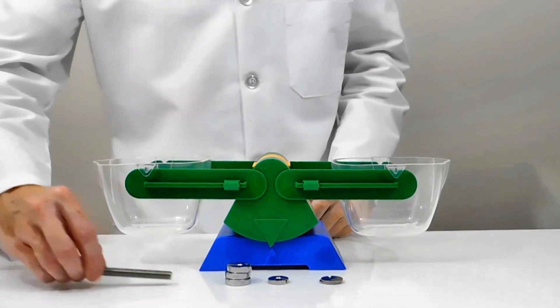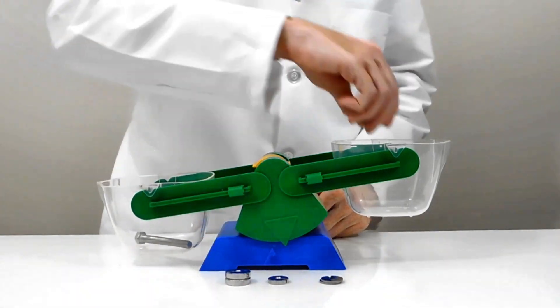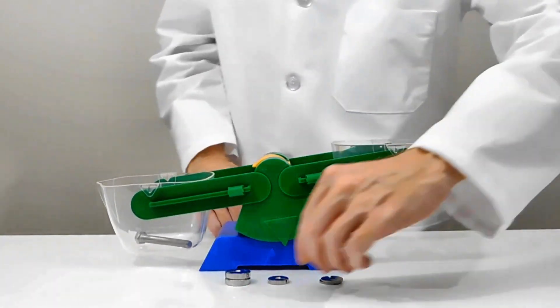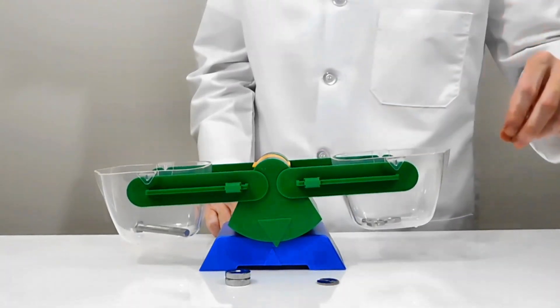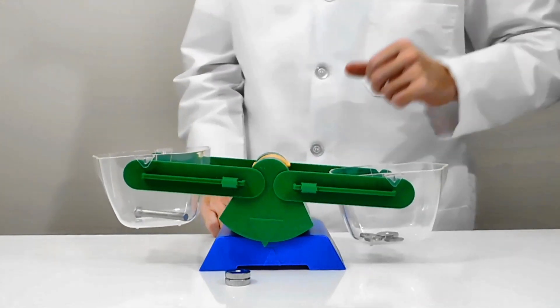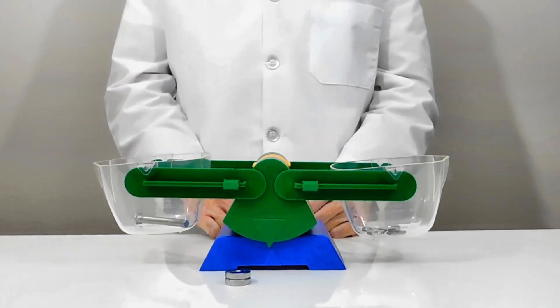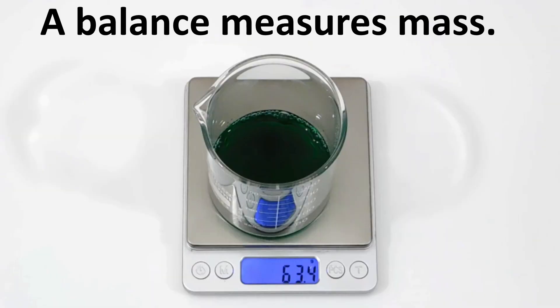One way to remember that balance is the name of the tool used to measure mass is to think of an old-fashioned balance tool that looks like this. We can find the mass of this bowl by adding these pieces to the other bucket until they balance. Each of these pieces has its mass written on it. Once the tool is balanced, we add up the pieces in the bucket and find the bowl's mass. To summarize this scientific instrument, a balance measures mass.